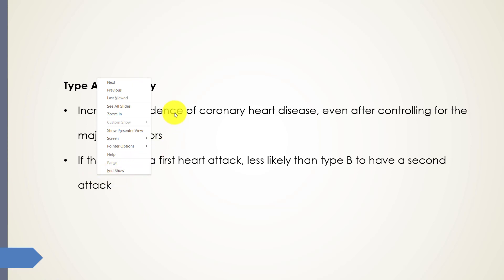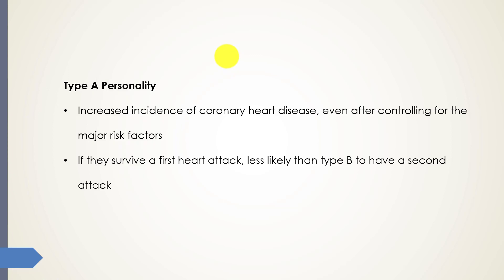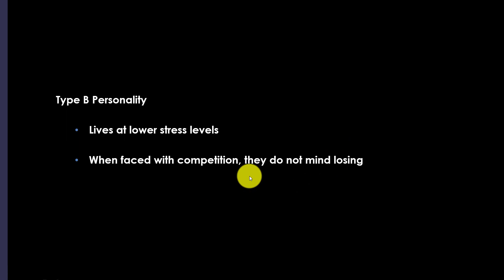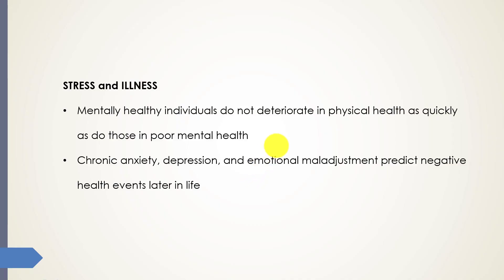The Type B personality tends to live at a lower stress level, and when faced with competition, they don't mind losing — which is something Type A would never accept. So we know about stress and illness. Is there a correlation between stress and illness? And the answer, of course, is yes.